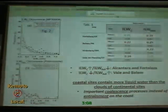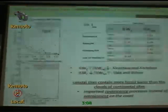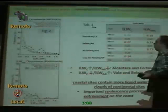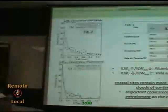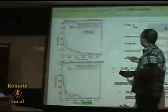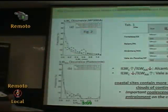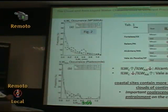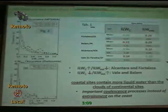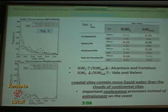The liquid water content for non-precipitating clouds: this chart shows the relative frequency histogram for all the sites in the SHUFA campaign, and all these statistical values can be found in this table. The green numbers show that when the liquid water content from the radiometer is greater than the adiabatic approach — when you look at Alcantara and Fortaleza, they have liquid water content greater than the adiabatic approach. We found positive values for Valle do Paraíba and Belém. We can conclude that the coastal sites contain more liquid water than the clouds at continental sites.